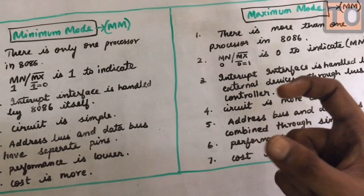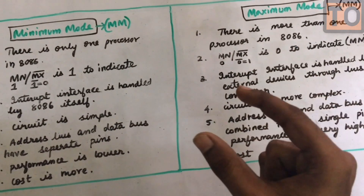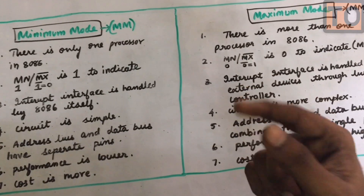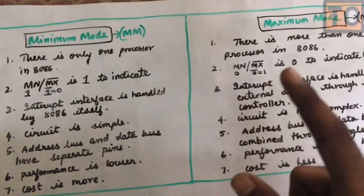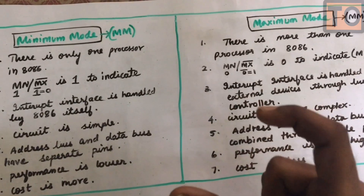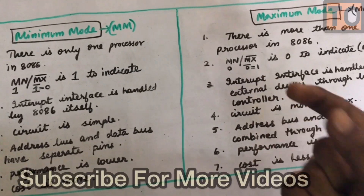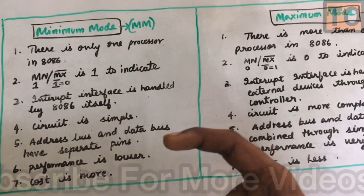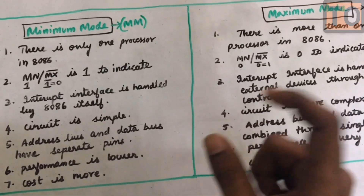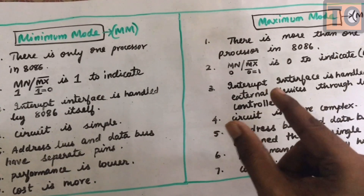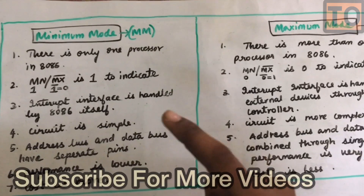For example, if one processor costs 12,000, and you add a four-way processor at 12,000 each, the total cost in minimum mode increases. In maximum mode, the total cost will be less than in minimum mode. This summarizes the minimum and maximum mode comparison.